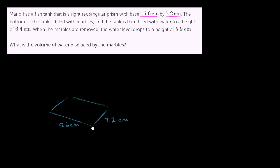And of course, it is a right rectangular prism, this fish tank that Mario has. So it looks something like this. This is his fish tank. I'll try to draw it as neatly as I can. So that's the top of the fish tank, just like that.